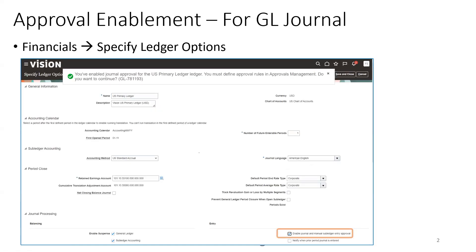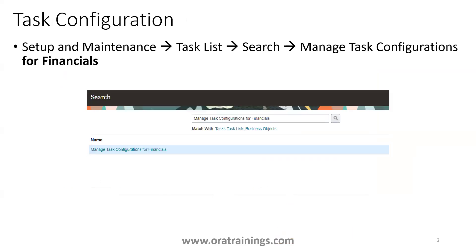The first slide explains how to enable approval for the GL journal. Until you enable this particular option for your GL journal, approval will not be required. We've checked the checkbox saying that approval is required for the journal. You also have another option at the journal source level — based on the source requirement, you need to enable the approval requirement.